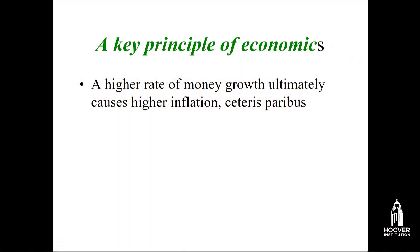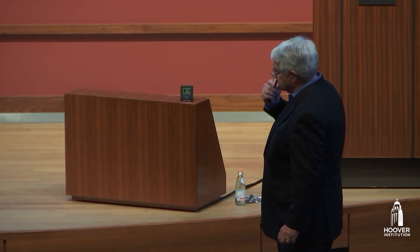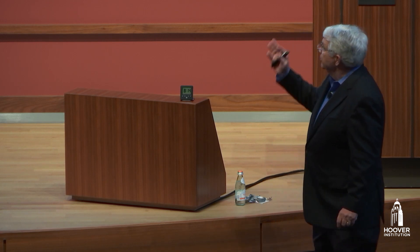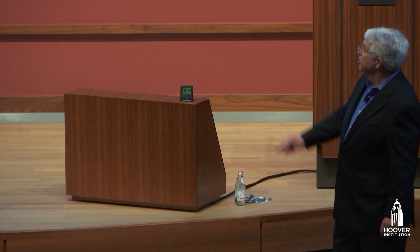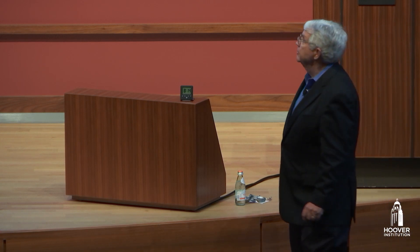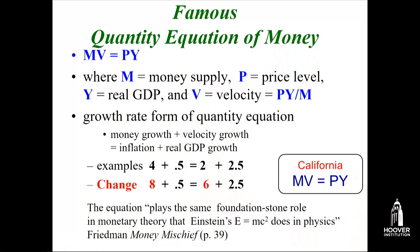One way economists use this simple principle is through a famous formula that Milton Friedman — our former colleague here — would use all the time. It's called the quantity equation of money: MV equals PY. Milton Friedman wrote much about this concept. He wrote a book called Money Mischief and argued that the quantity equation plays the same foundation-stone role in monetary theory that Einstein's E equals mc squared does in physics. That's a pretty powerful analogy.